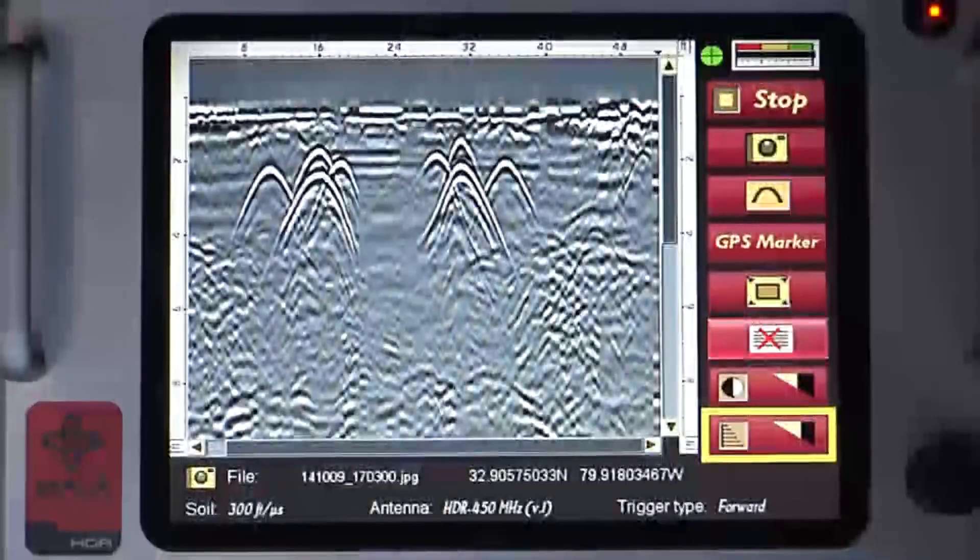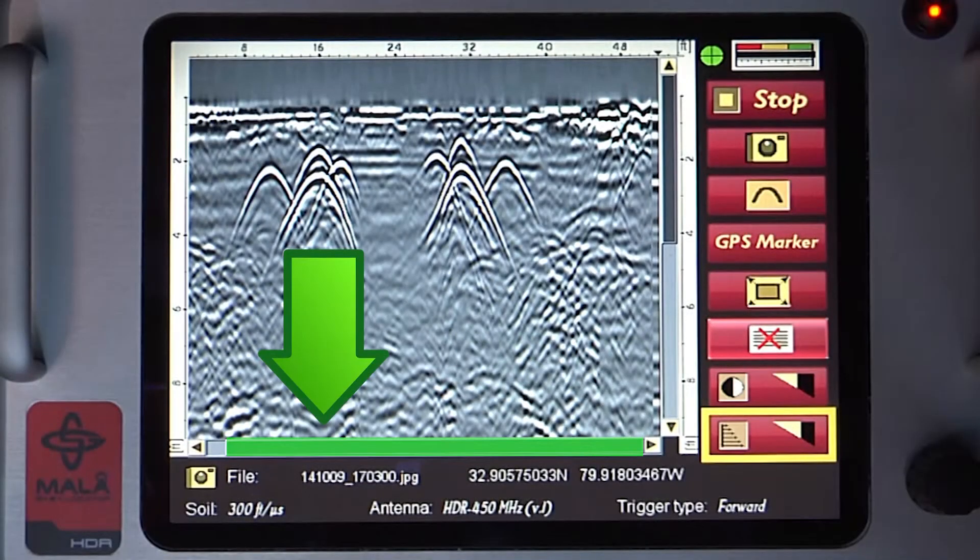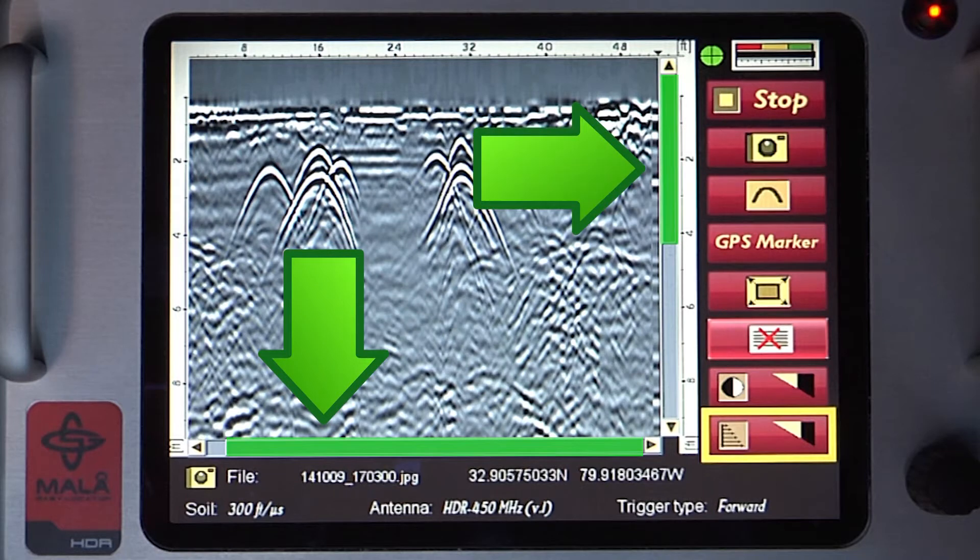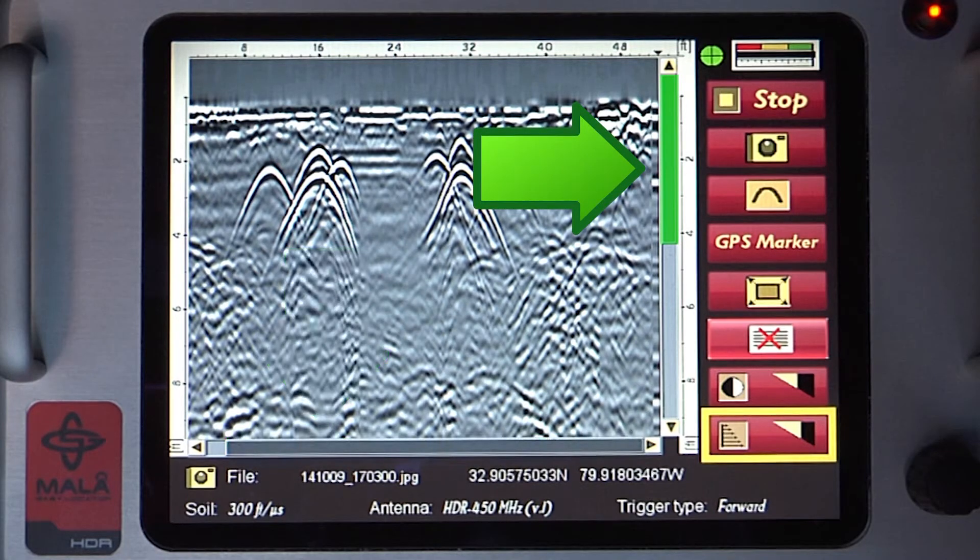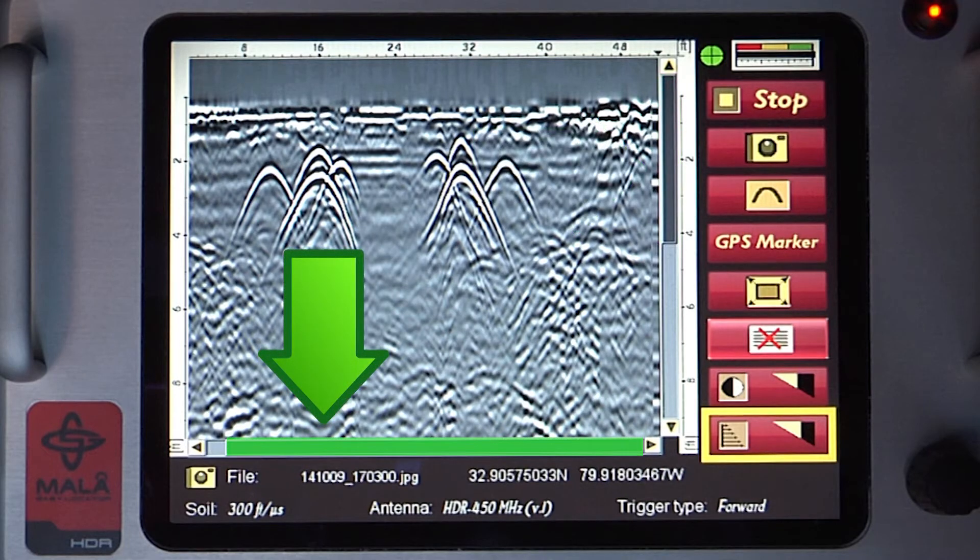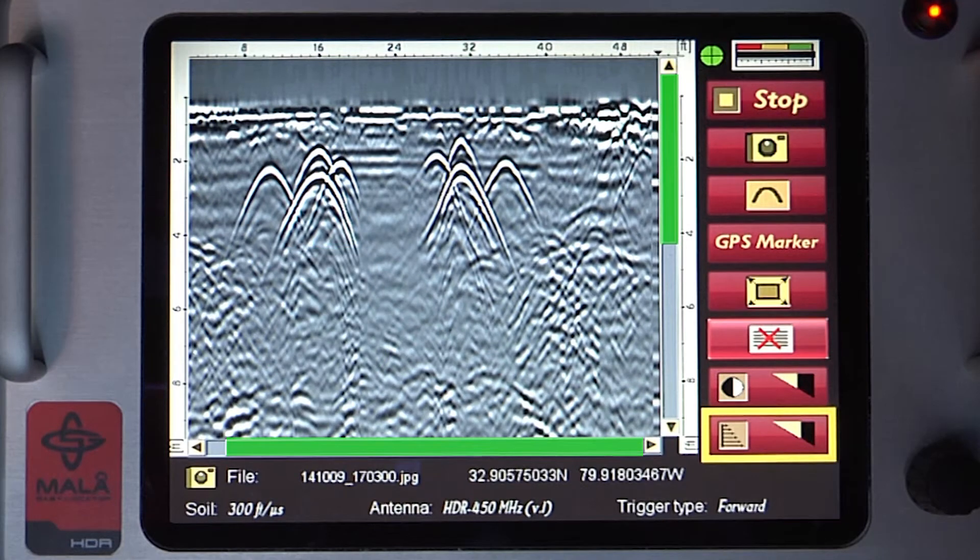Once in the acquisition mode, you'll notice a scroll bar at the bottom and right side of the data screen. The right scroll bar is the zoom control, and the bottom scroll bar is for scrolling through a data set. This topic will be discussed in more detail in another section of this video.